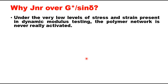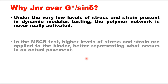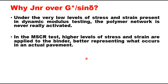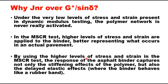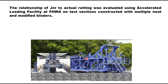Under the very low levels of stress and strain present in dynamic modulus testing, the polymer network is never really activated. In the existing PG specifications, the polymer is really measured as a filler that stiffens the asphalt. In the case of the MSCR test, higher levels of stress and strain are applied to the binder, giving a better understanding of what occurs in an actual pavement. This captures not only the stiffening effect of the polymer but also the delayed elastic effects where the binder behaves like a rubber band.